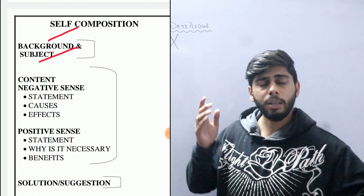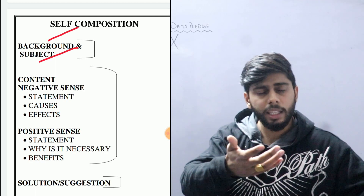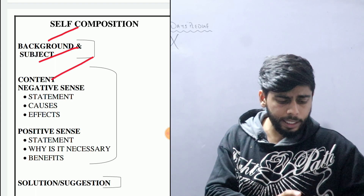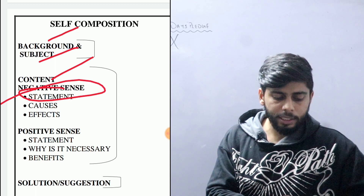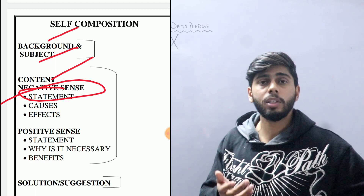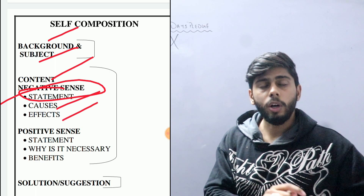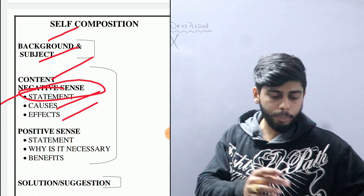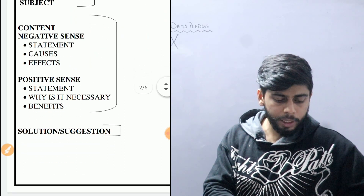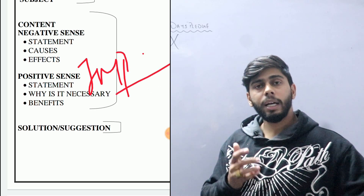You can give a negative sense statement, for example about price rising: how price rising is a big problem which is affecting the budget of a common man. Then you can mention causes — why price rising is happening — and its effects. The topic will be either positive or negative. Negative means we are writing about a problem; positive means we are writing about the importance of something.